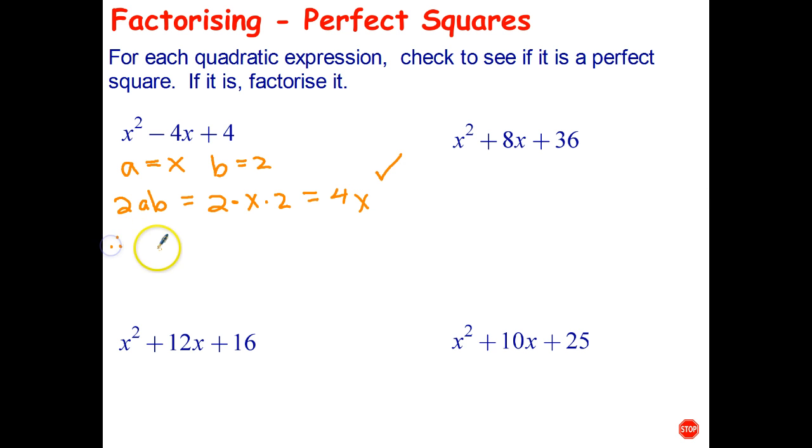So we know that that is a perfect square. And we can say, therefore, it equals, and now it's just going to equal, in brackets, a minus b, because of the subtract there. So it's going to be x minus 2 all squared. And you can, of course, check that by expanding this out, and you'll get back to that expression just there.